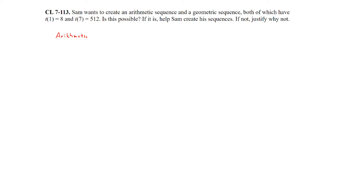We can definitely create an arithmetic sequence. Arithmetic is linear, so two points form a line. Setting up a table: we know position 1 is 8 and position 7 is 512. Since it's linear, we can find the slope: 512 minus 8, divided by 7 minus 1.